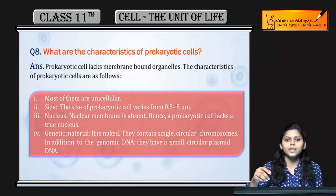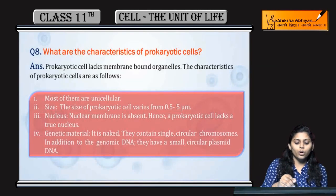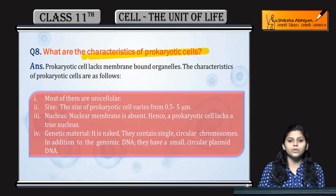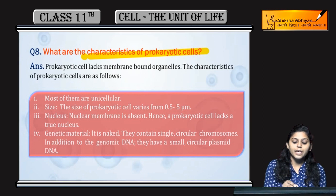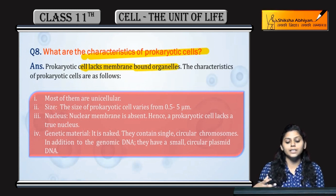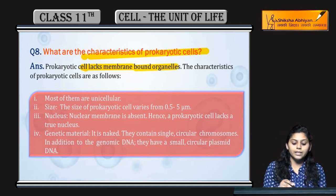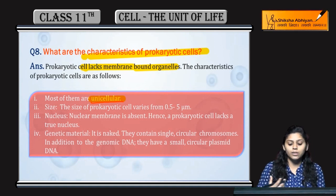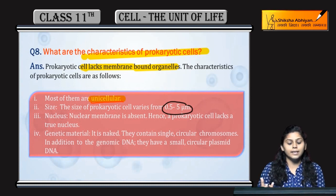Next question: what are the characteristics of prokaryotes? Prokaryotes mein kya hota hai — membrane nahin hoti, membrane bound organelles bhi nahin hoti. Features ki baat karen to mostly prokaryotes unicellular hote hain, aur size 0.5 to 5 micrometer vary karta hai.